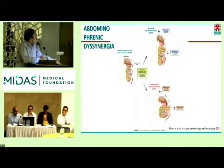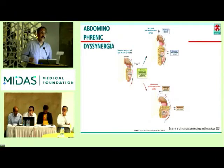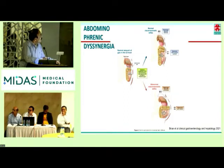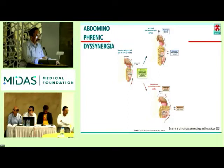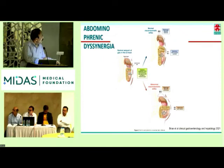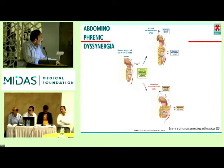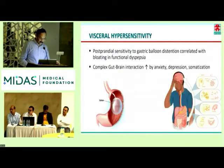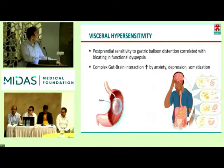This is abdominophrenic dyssynergia, which is also supposed to be one of the factors for perceiving distension or bloating of the abdomen. Normally when gas goes into the intestine, in a normal person the diaphragm goes up and the abdominal muscle contracts, increasing the longitudinal capacity of the stomach. In patients who have abnormal viscerosomatic reflex, the diaphragm contracts and comes down and the abdominal wall relaxes — the reverse happens. This is abdominophrenic dyssynergia, which is an important factor for perceiving distension.